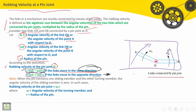Note: When the pin connects one sliding member and the other turning member, the angular velocity of the sliding member is zero. In such case, rubbing velocity at the pin joint is equal to ω × R, because we have only one angular velocity for the member making rotation, where ω is the angular velocity of the turning member and R is the radius of the pin.